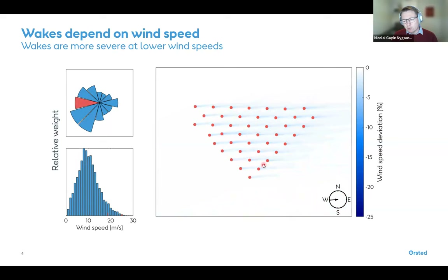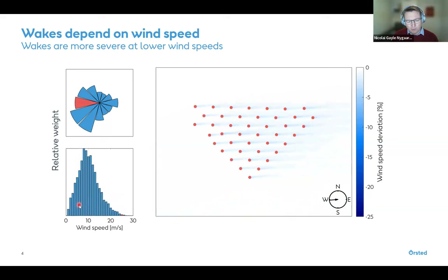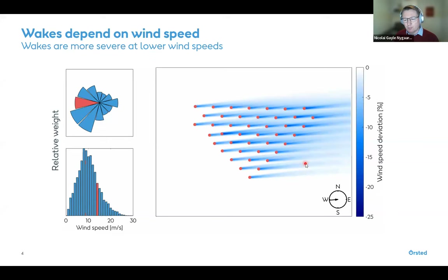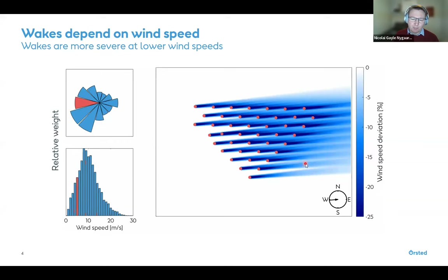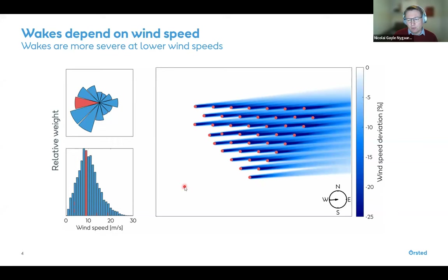Wakes also depend on wind speed. At higher wind speeds, the wake deficit diminishes because turbines pitch their blades out of the wind to maintain constant power output, letting more air pass through unimpeded. So when calculating wake losses for a future wind farm, you must consider the wind direction distribution — the wind rose — and also the wind speed distribution.